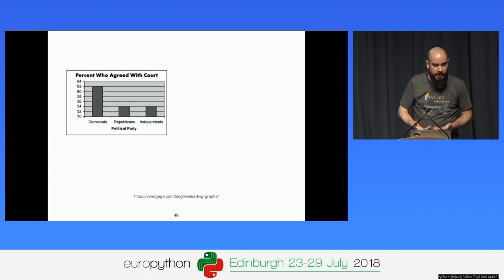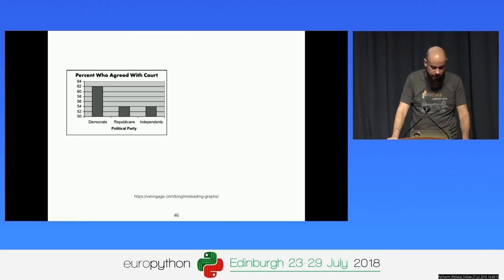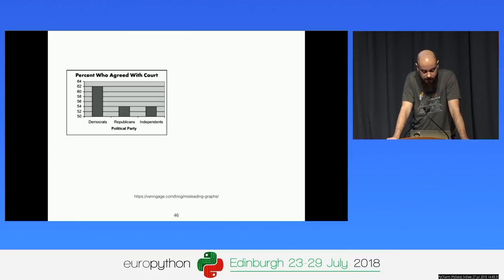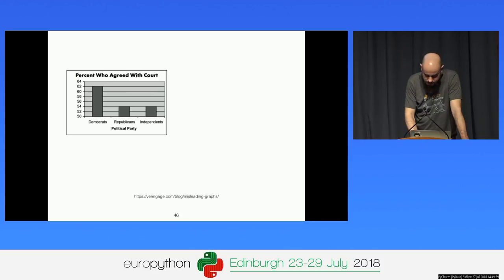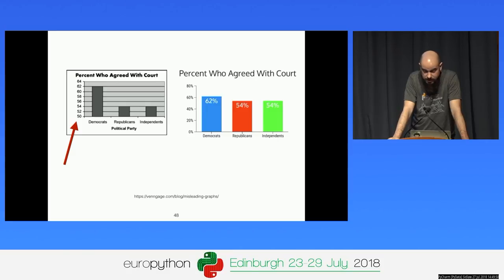Data visualization is also used to communicate to the broader public. Here a newspaper wanted to showcase how different parties support a particular court decision. The bar for Democrats looks almost three times bigger than the others. But the vertical axis starts not from zero but from 50. Once you normalize everything, you see the bars are different, but the difference is not so huge — maybe a less interesting story from a newspaper point of view.